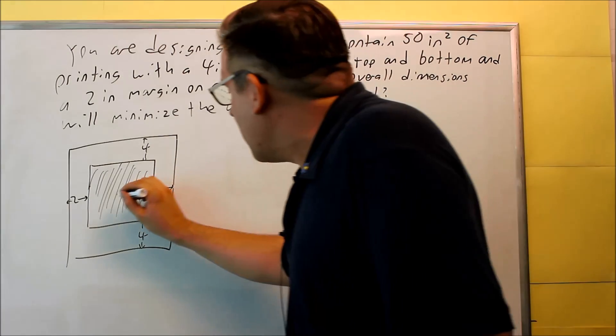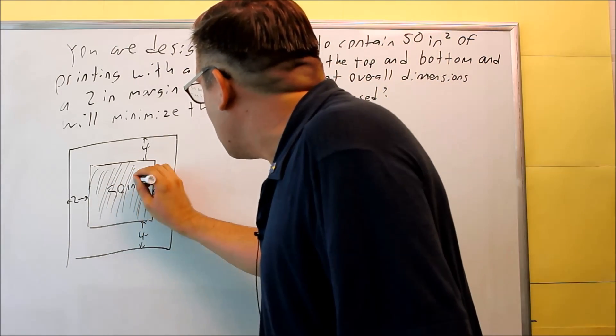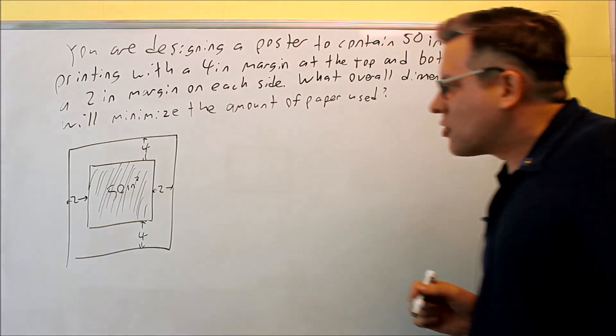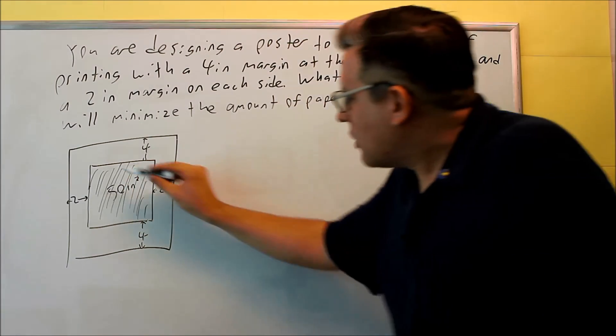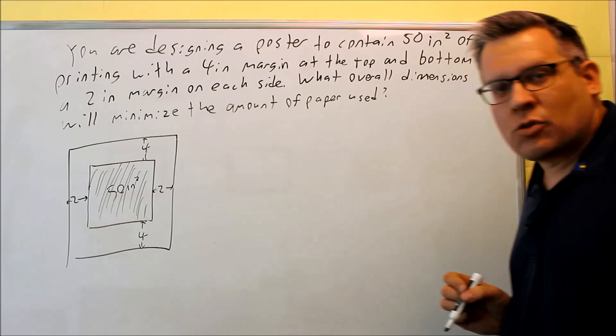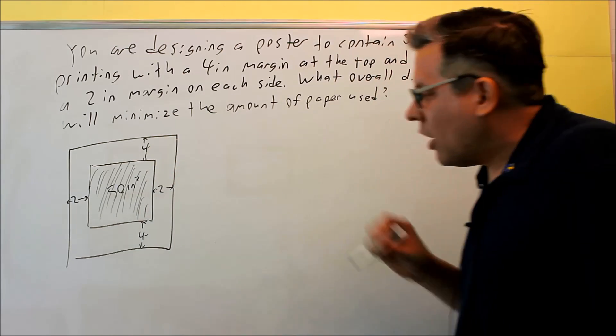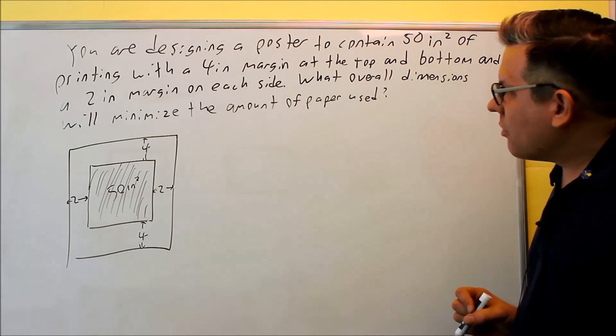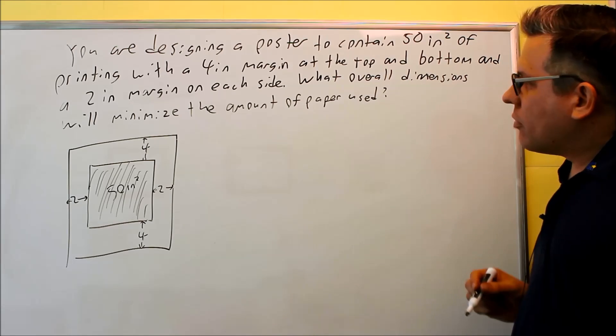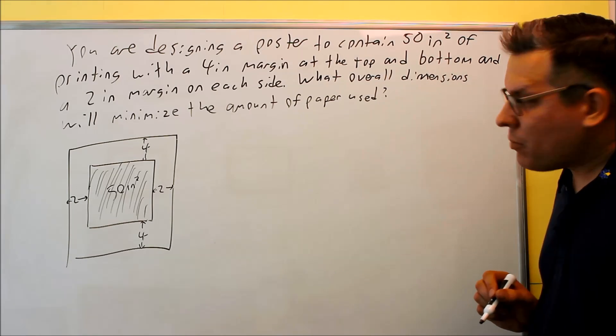So now we have that. And then inside here, this part has to be 50 square inches. So that's the space that's filled there with the actual printing material. And then there's our margins that are put in there. So it says what overall dimensions will minimize the amount of paper used?